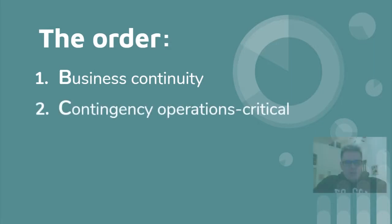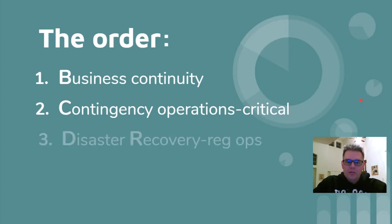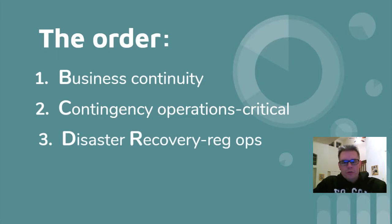BC — then C stands for contingency operations. Just bear with me here for a second; this is for memorization purposes only, for the order. So you have contingency operations, which happens after business continuity — that's bringing the critical stuff back up after a disaster. And then after the critical stuff is back up and running, you have disaster recovery, which is when you're going to bring your regular operations back online.